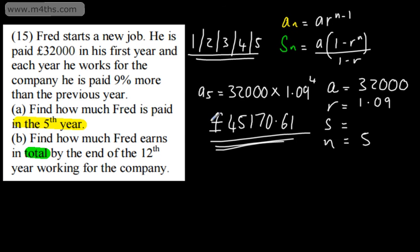Right, let's now move on to the second part. We need to find the sum. A, R, S, N. If we look at these values, we've got A. That doesn't change. 32,000. The ratio is 1.09. Now, we're looking by the end of the 12th year. So, this is going to be 12.